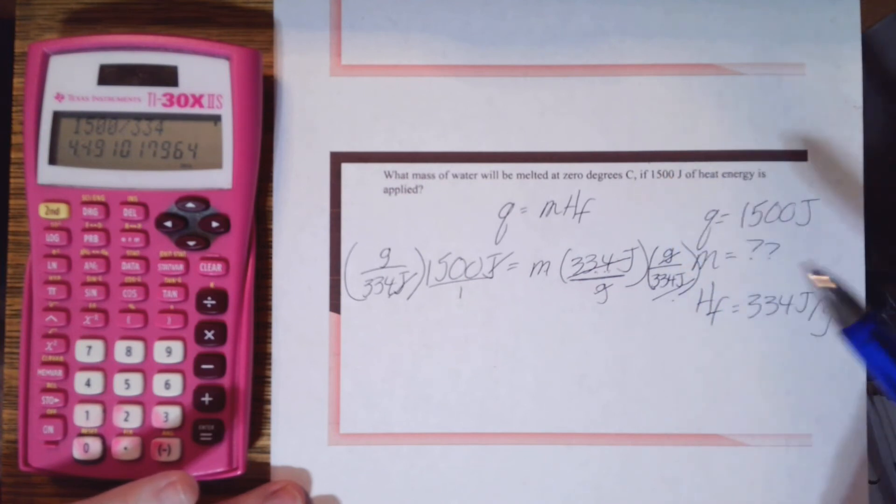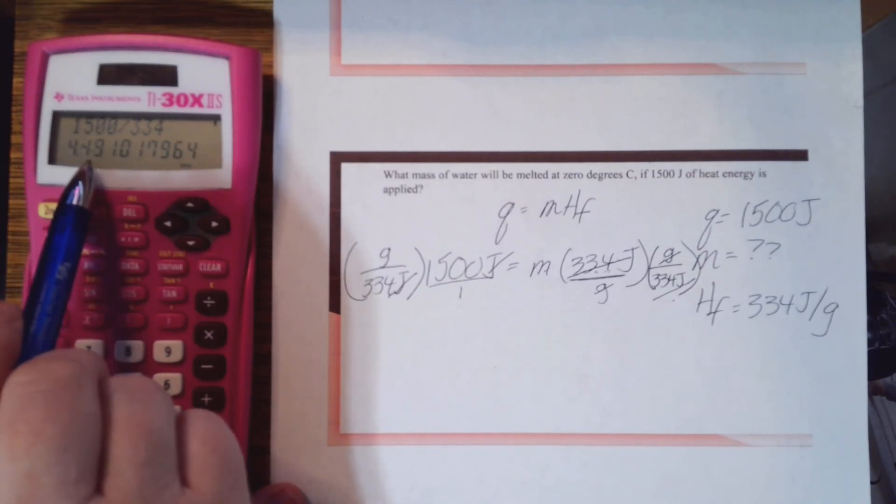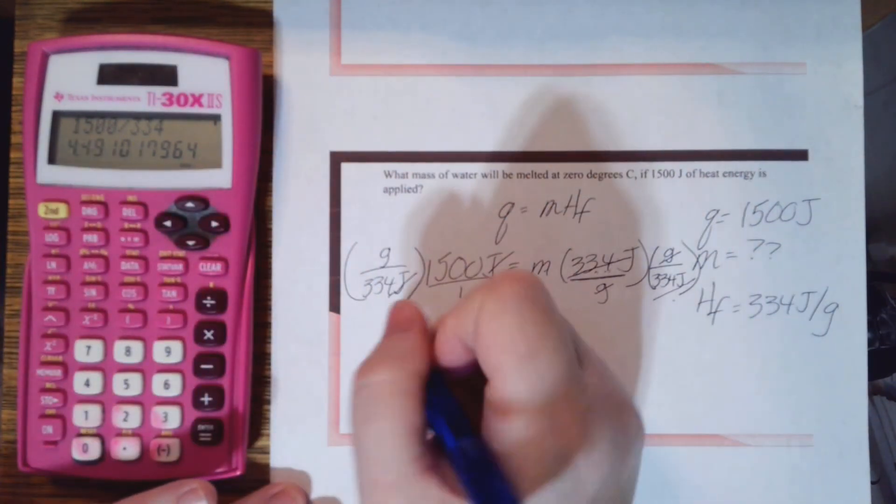Okay, check significant figures in the data given to me and the numbers given to me: two. So I need two in my answer. So that means I keep the four, four, and then for this four I decide, keep the four or round up? I'm going to round it up. So 4.5 grams is mass.